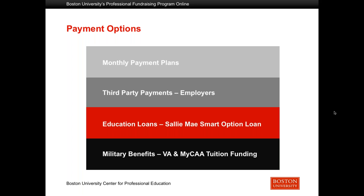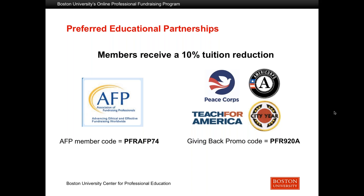The program is approved for enrollments via Sallie Mae, with loan information available on the website. It is also approved by the VA and MyCAA for military students. If you are a member of the Association of Fundraising Professionals, or a current or past participant in the Peace Corps, AmeriCorps, Teach for America, or City Year, you are eligible for a 10% discount. Just enter the promotional codes in the shopping cart for a savings of approximately $250 off tuition. Those promotional codes can also be found directly on the website.